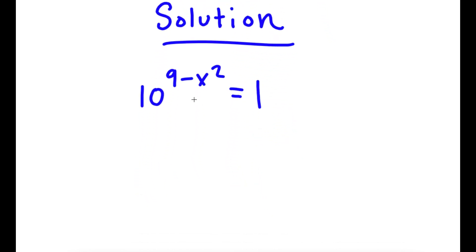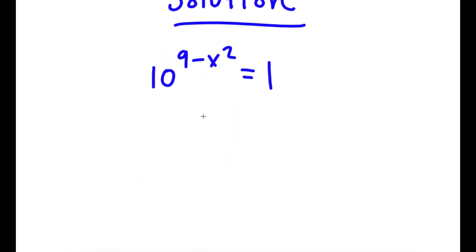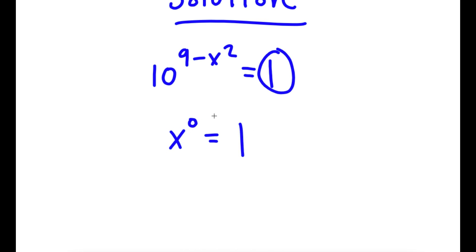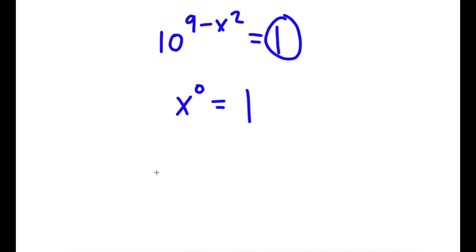If I have something in the form x to the power of 0, any number to the power of 0 is simply 1. We see 1 here, and 1 is the same thing as a number to the power of 0. So I'm going to rewrite 1 as 10 to the power of 0. Now I have 10 to the power of 9 minus x squared is equal to 10 to the power of 0.